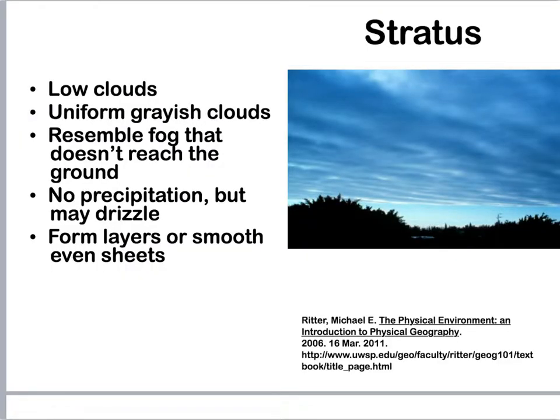First up we have stratus clouds. Stratus are low-lying, so less than 8,000 feet. These are uniform and grayish clouds — think of those really long, overcast days. They can resemble fog that doesn't quite reach the ground. Typically they don't produce any precipitation, and they're smooth and flat, a lot like bed sheets.